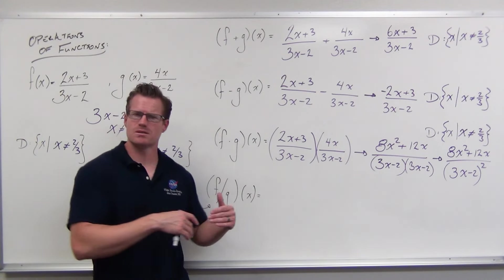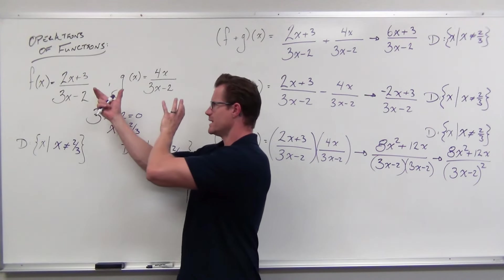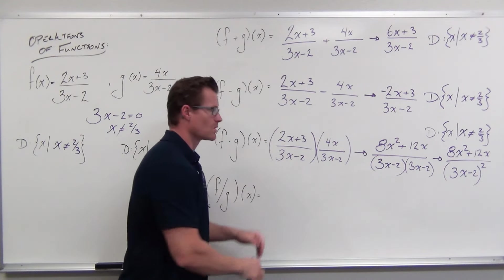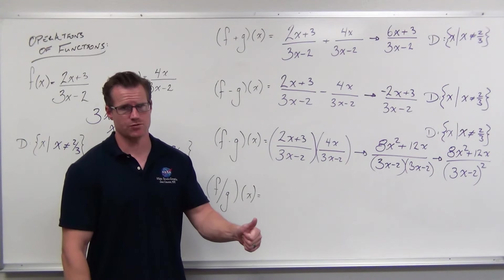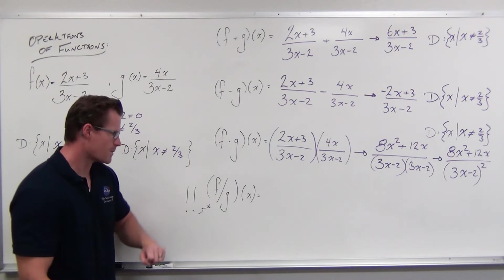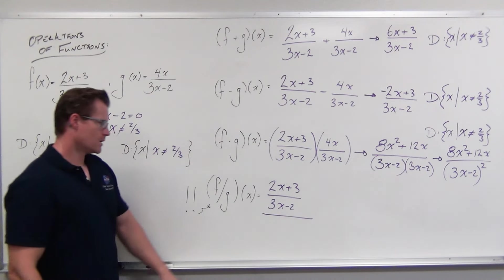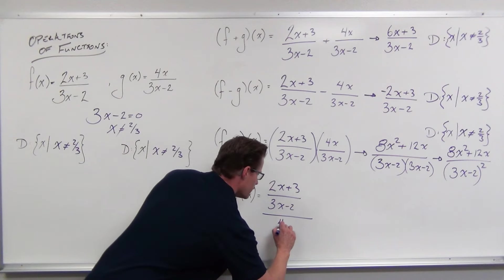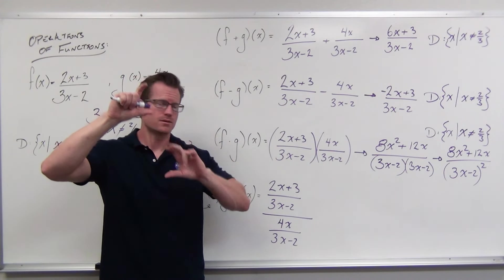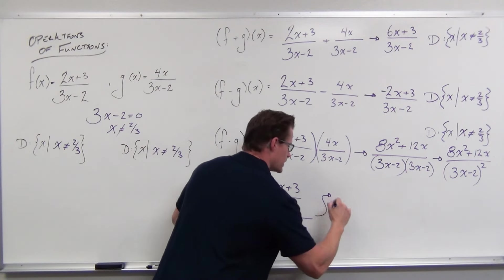So I said this at the beginning: x can't equal two-thirds. Because the resultant function starts from those root functions, you can't have two-thirds no matter what we get. When we divide, f divided by g means f is 2x plus 3 over 3x minus 2, divided by 4x over 3x minus 2. We know that fraction divided by fraction means we reciprocate and multiply.